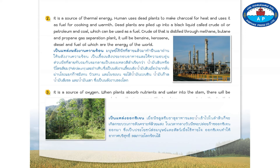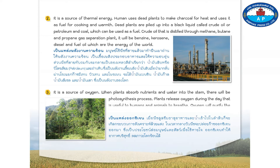Number three, it is a source of oxygen. When plants absorb nutrients and water into the stem, there will be a photosynthesis process. Plants release oxygen during the day that is useful to humans and animals to breathe. Oxygen will purify the air and reduce global warming.